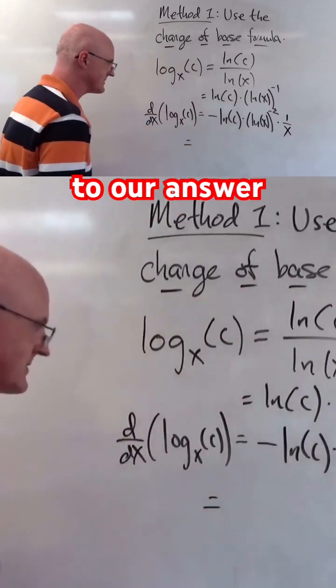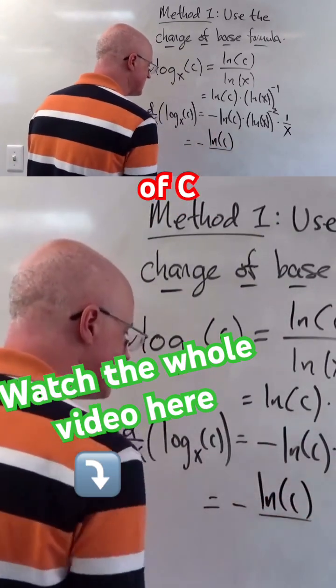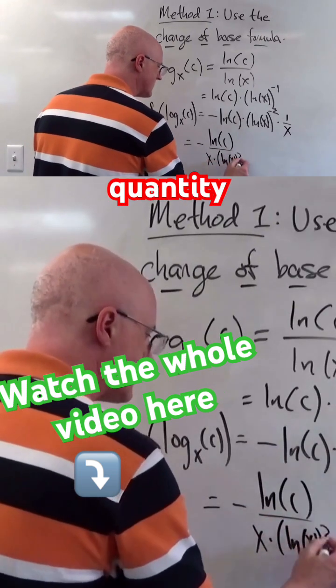This can then be simplified to our answer. The negative of the fraction, natural log of c, divided by x times natural log of x, quantity squared.